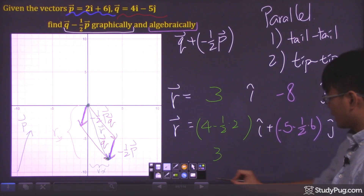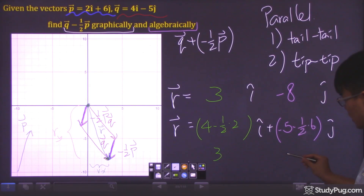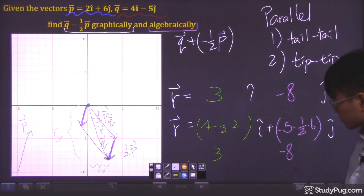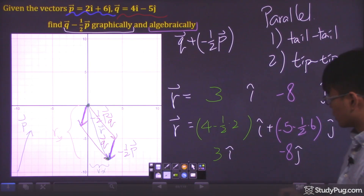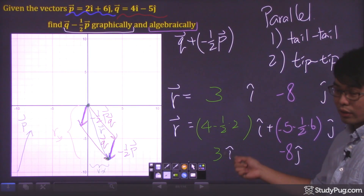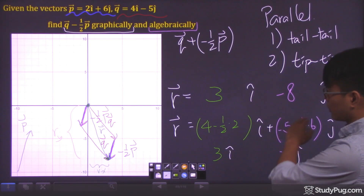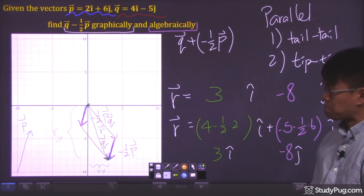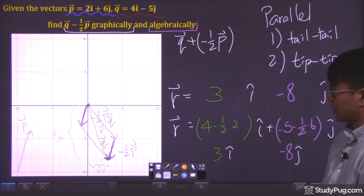For the y bracket: negative 5 minus one half times 6 is negative 5 minus 3, which gives us negative 8. So we have 3 as our x component and negative 8 as our y component, which is exactly what we got graphically. We have verified the correct answer, and we're done.